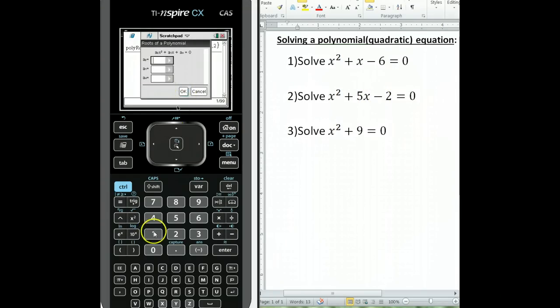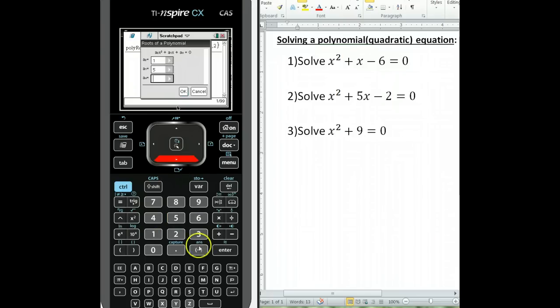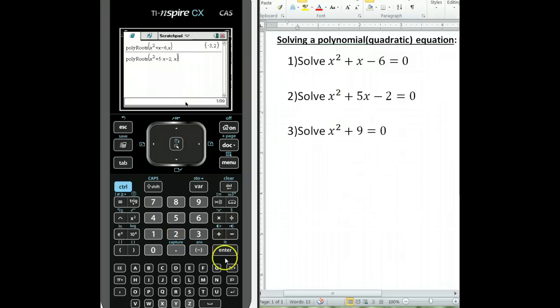The coefficients are 1, 5, and negative 2. Click OK, hit Enter, and you have your two roots.